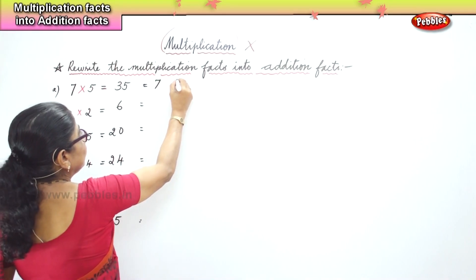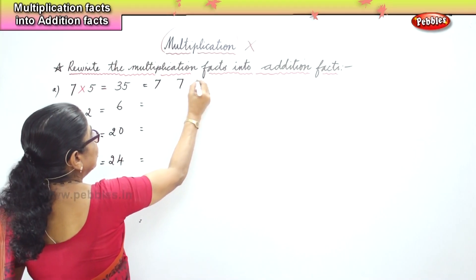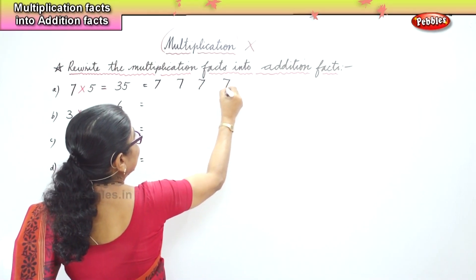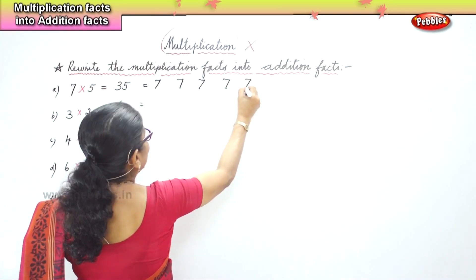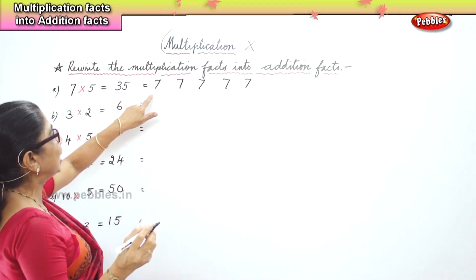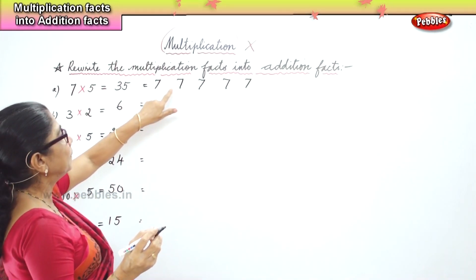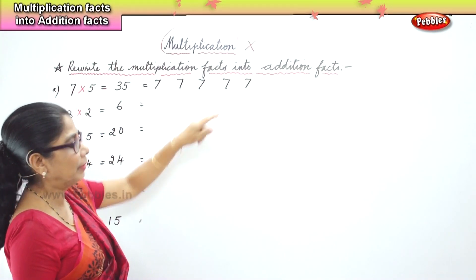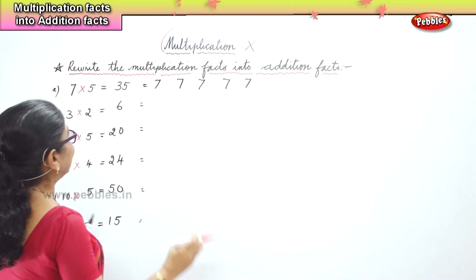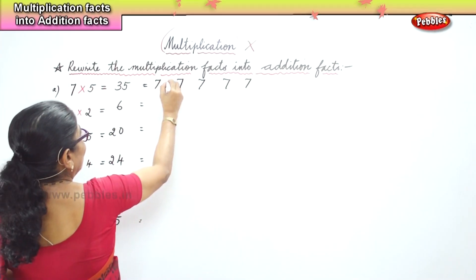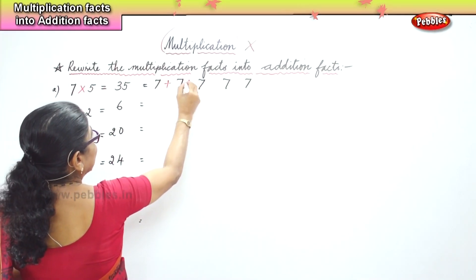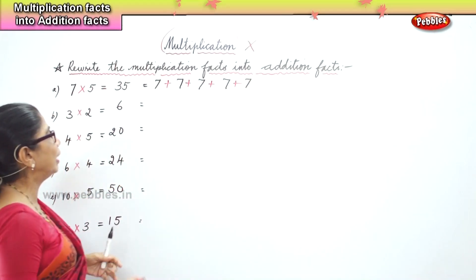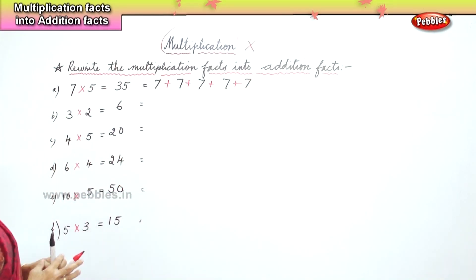So seven, one, two, three, four, five — seven five times. Seven plus seven plus seven plus seven plus seven. That is 35. One, two, three, four and five.